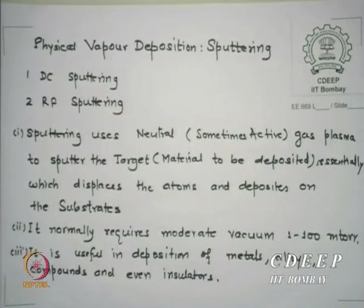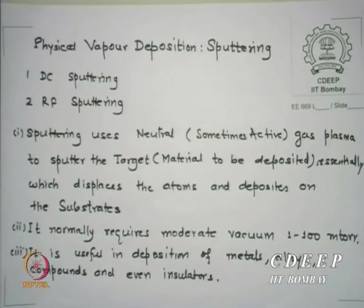In most cases sputtering is done with a neutral gas like argon, but there is a possibility you can add some reactive gases like oxygen. So if you are sputtering and you also have oxygen plasma, then you can oxidize something. This is called reactive sputtering. But most cases people do neutral ion sputtering.